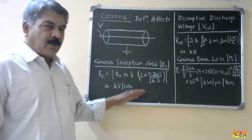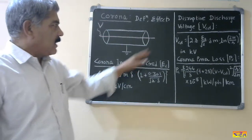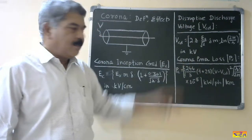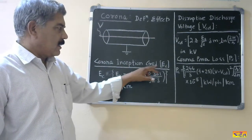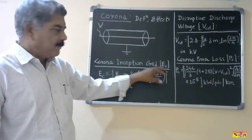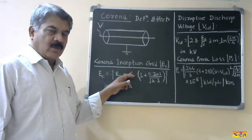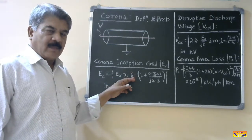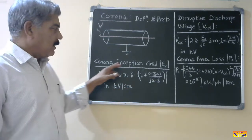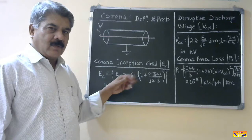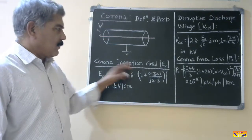Now, there are three important terms formally associated with corona. First is corona inception gradient, then disruptive discharge voltage, and corona power loss. Corona inception gradient, denoted by E subscript C, is the minimum voltage gradient required to generate corona in air on the surface of a conductor.